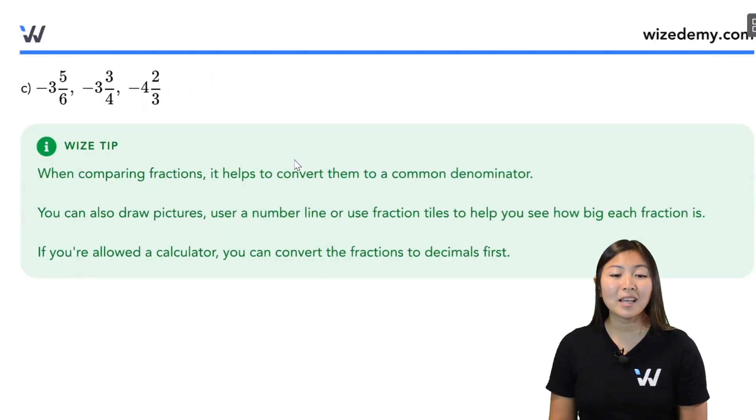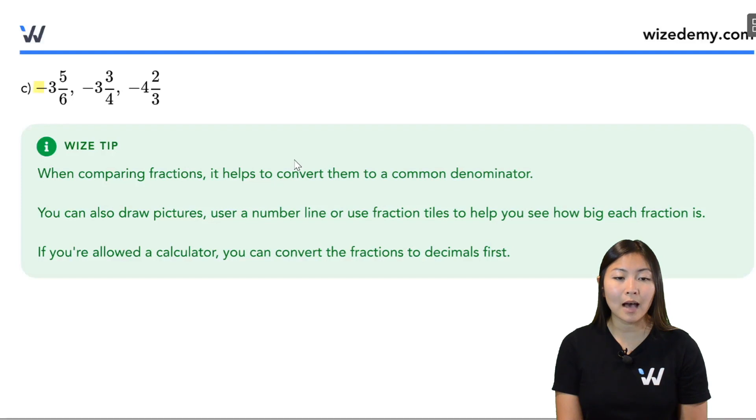Okay, part C, we have mixed numbers. These mixed numbers also have fractions, so they follow the same rule that we did for fractions earlier. So looking at my numbers, I have a negative 3 and a bit, negative 3 and a bit, negative 4 and a bit.